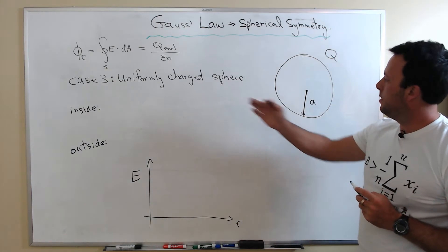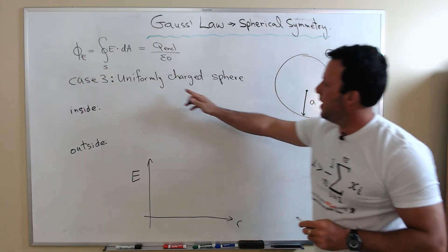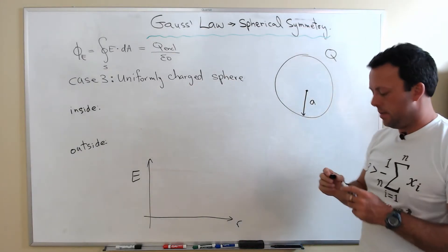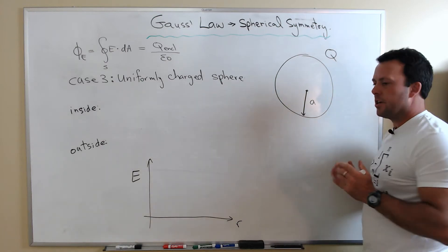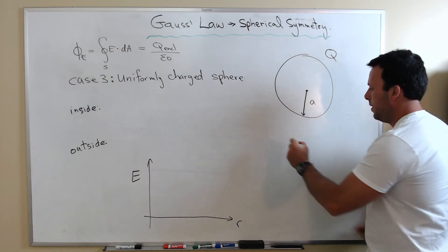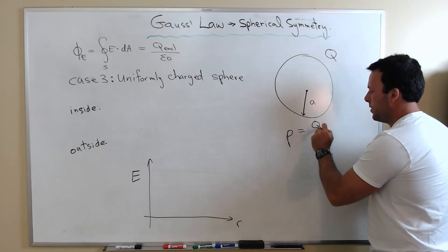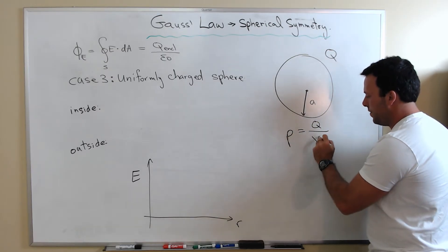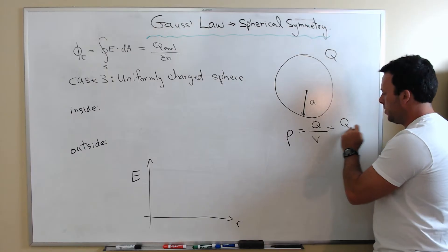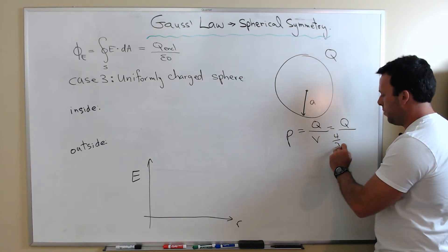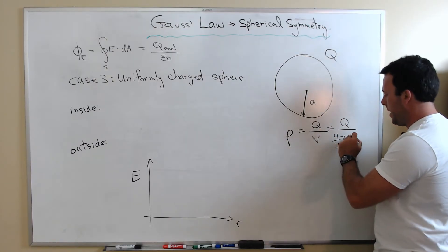Let's first define what uniformly charged sphere actually means. That means that the charge density is uniform. So the charge density over the entire volume is simply the charge divided by the volume of the sphere. The volume of the sphere is simply four-thirds pi A cubed.